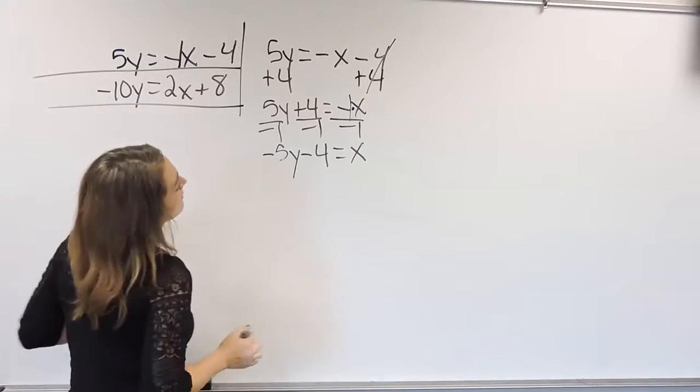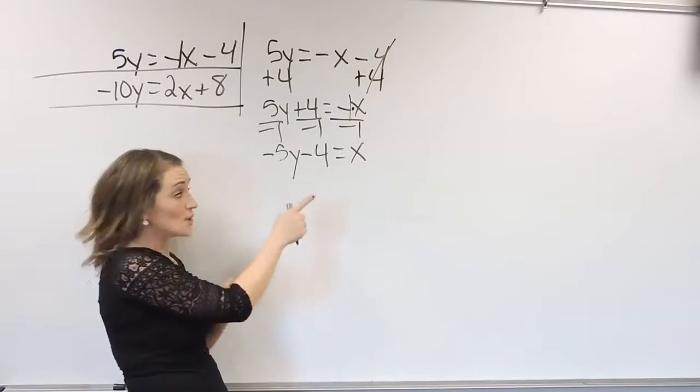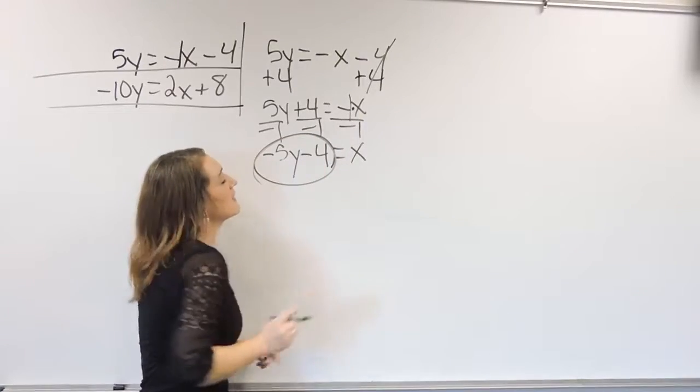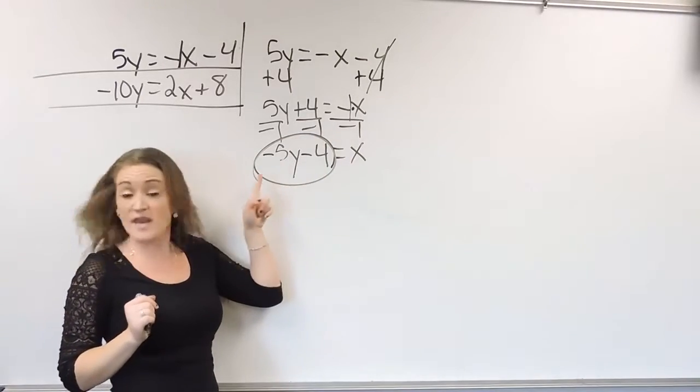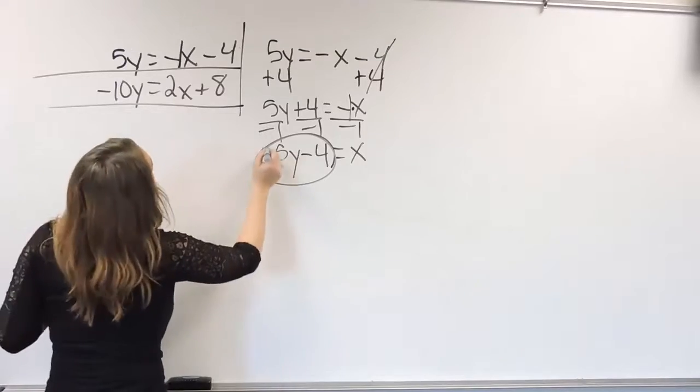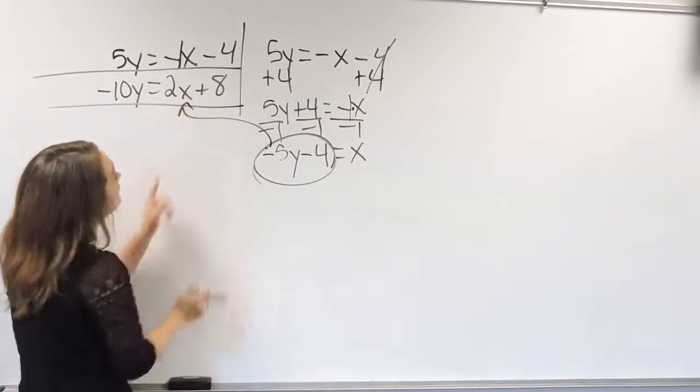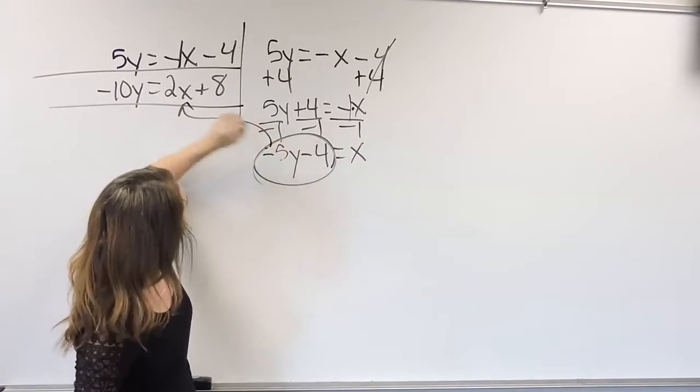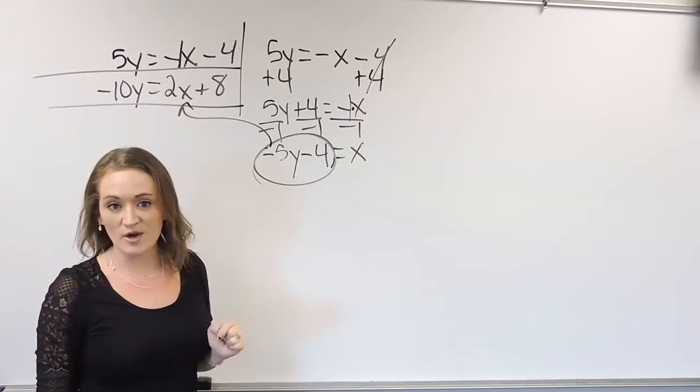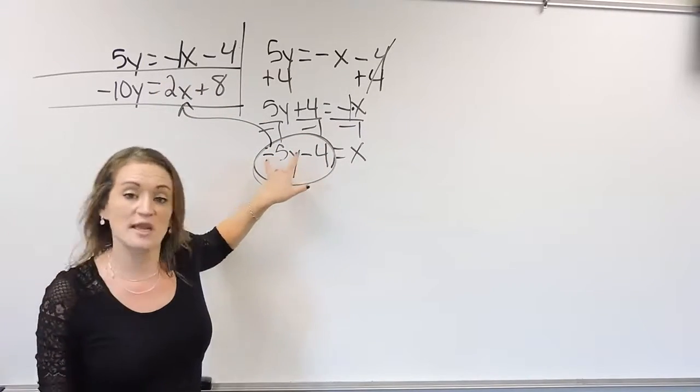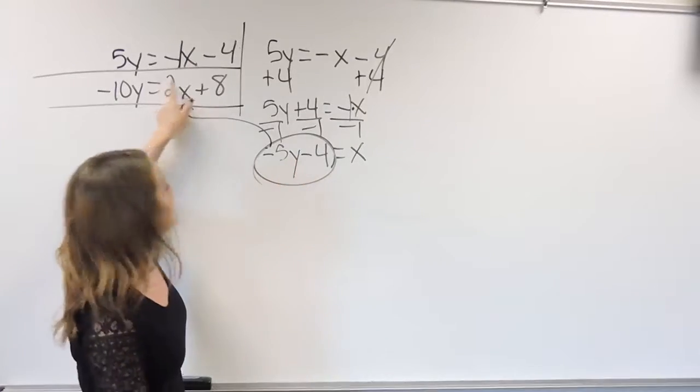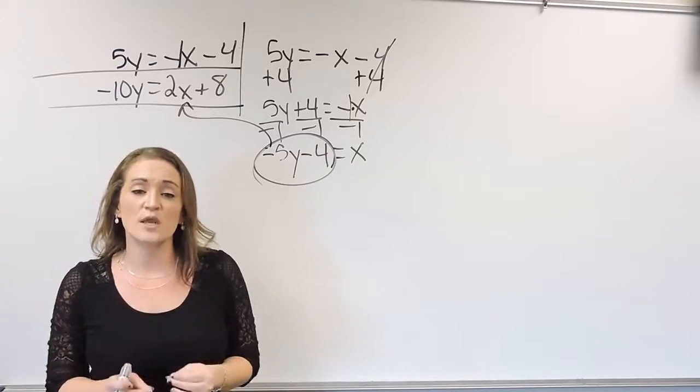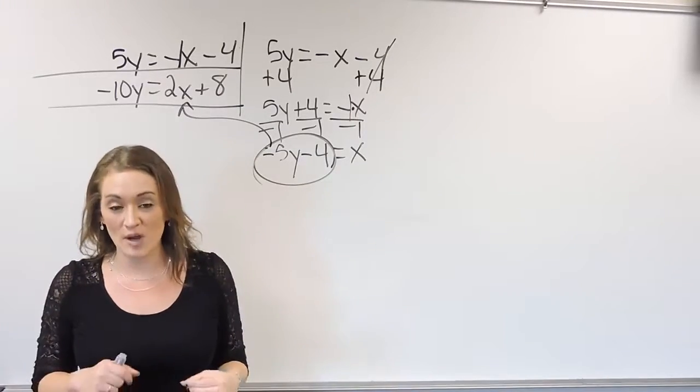And what I'm going to do now is if x equals negative 5y minus 4, that means I should be able to take the negative 5y minus 4 and plug that in for x because x equals this. So I should be able to plug this into this equation here. So we're substituting this equation into this one. That's what the whole substitution method is about. Substitute one of your equations into the other one.